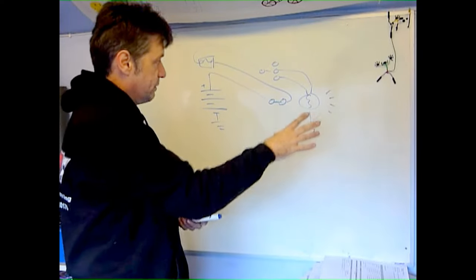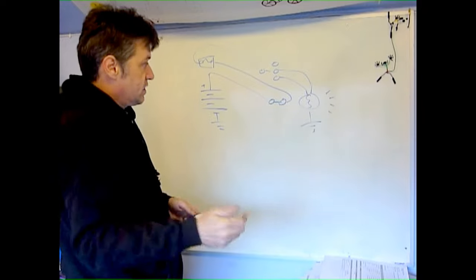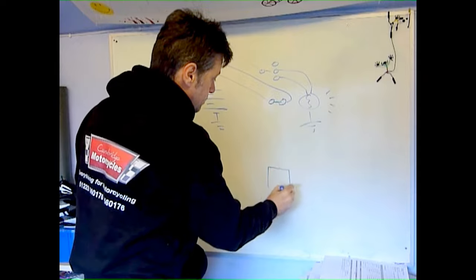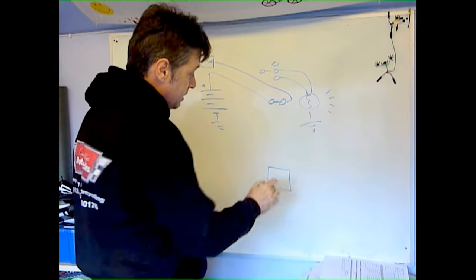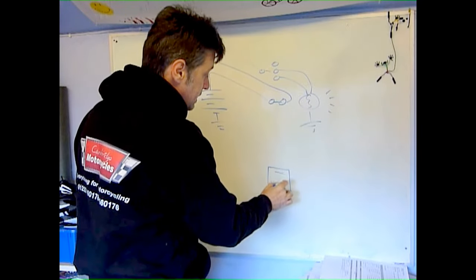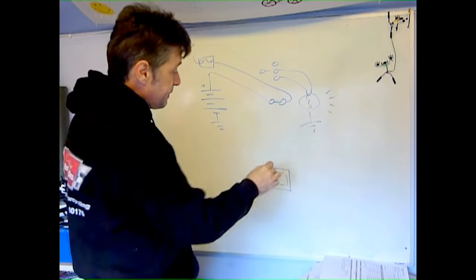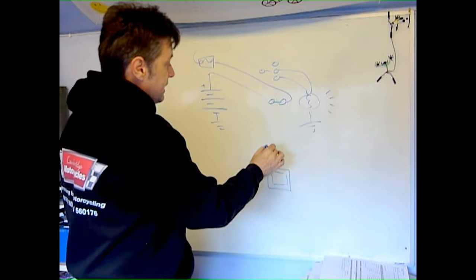This is where relays come into it. A relay is just a simple switch - has four poles (quite often they have five, but the ones we'll be using have four poles for a lighting circuit; the fifth pole tends to be unused anyway). Two of those poles carry a low current, and they then use that low current to switch a high current.